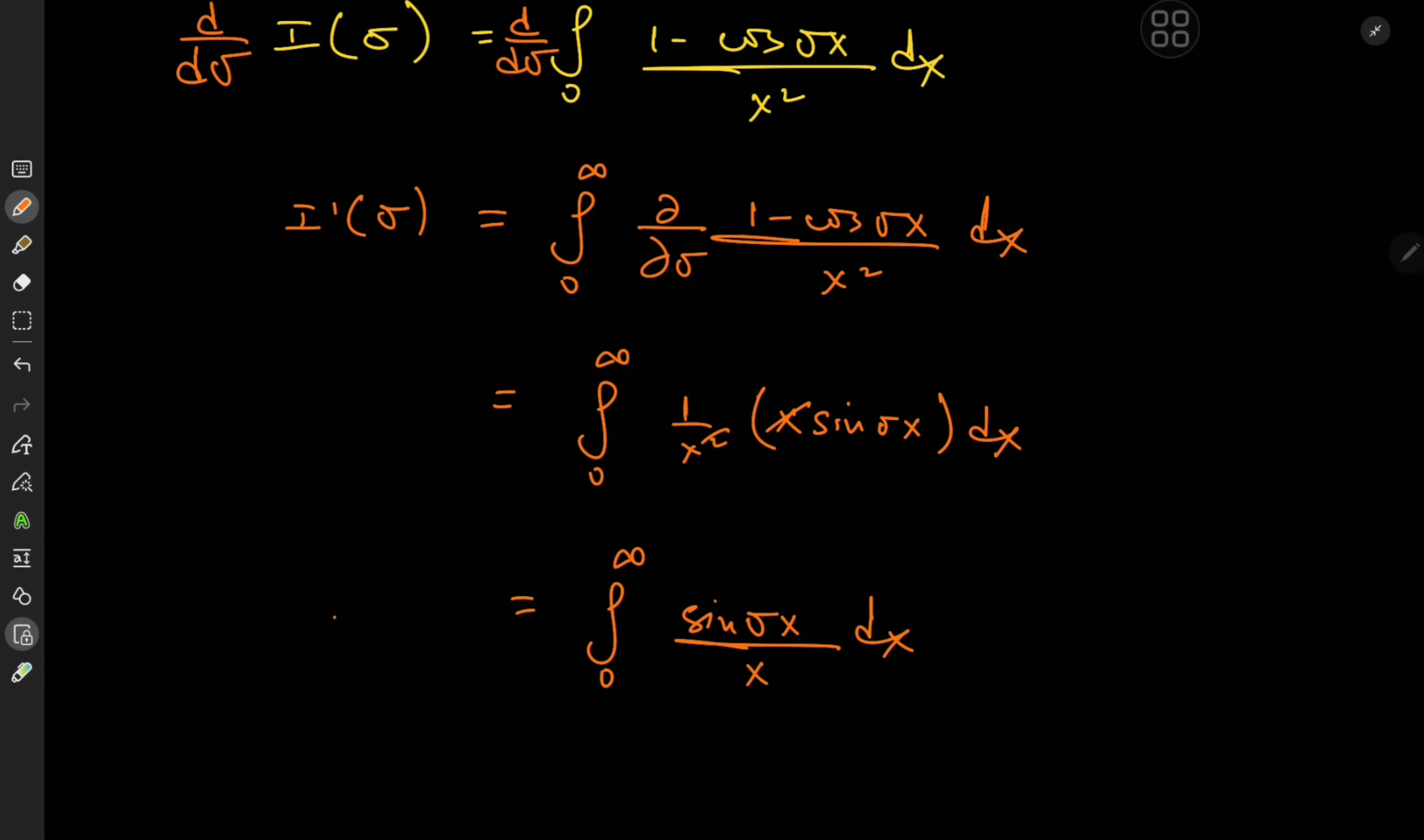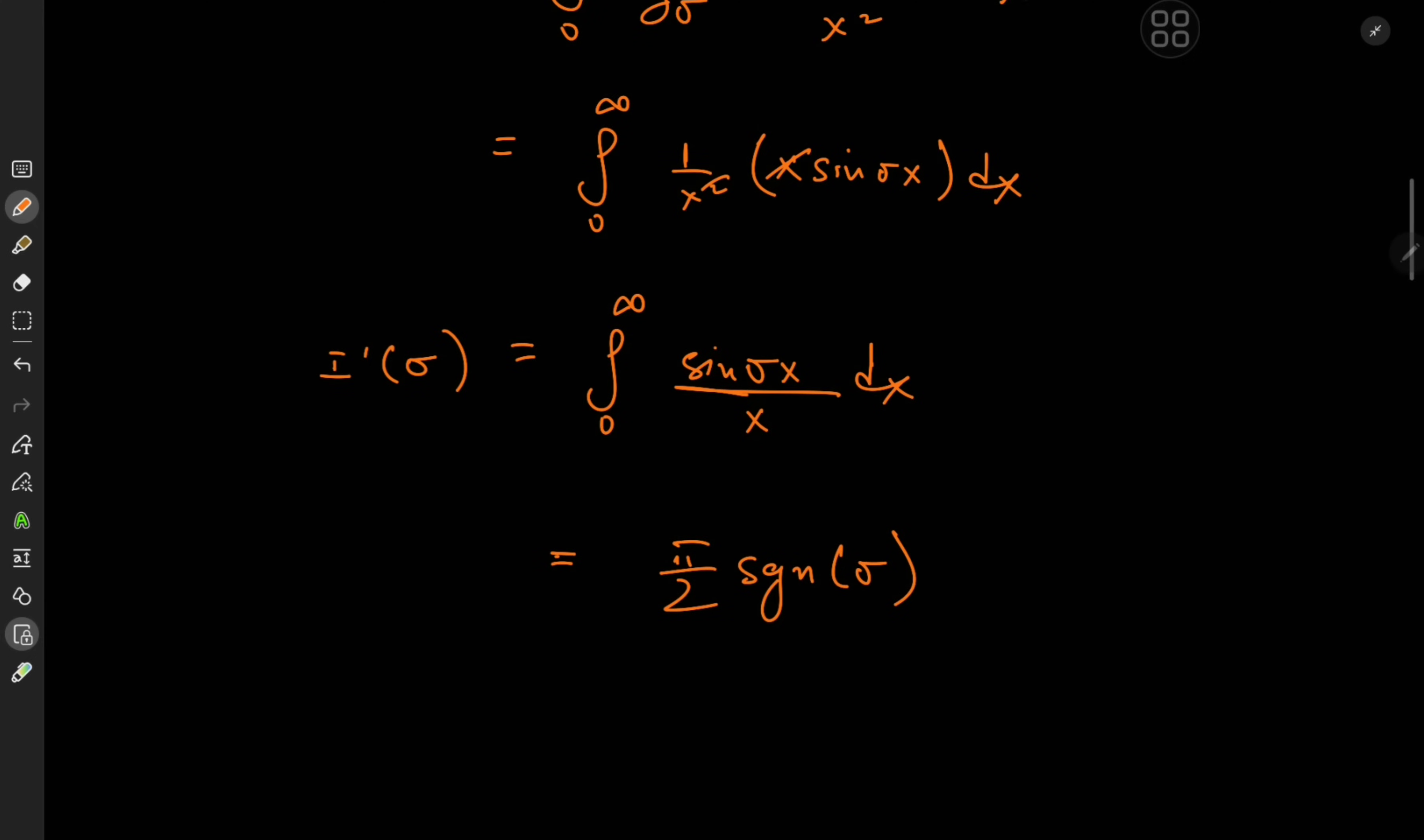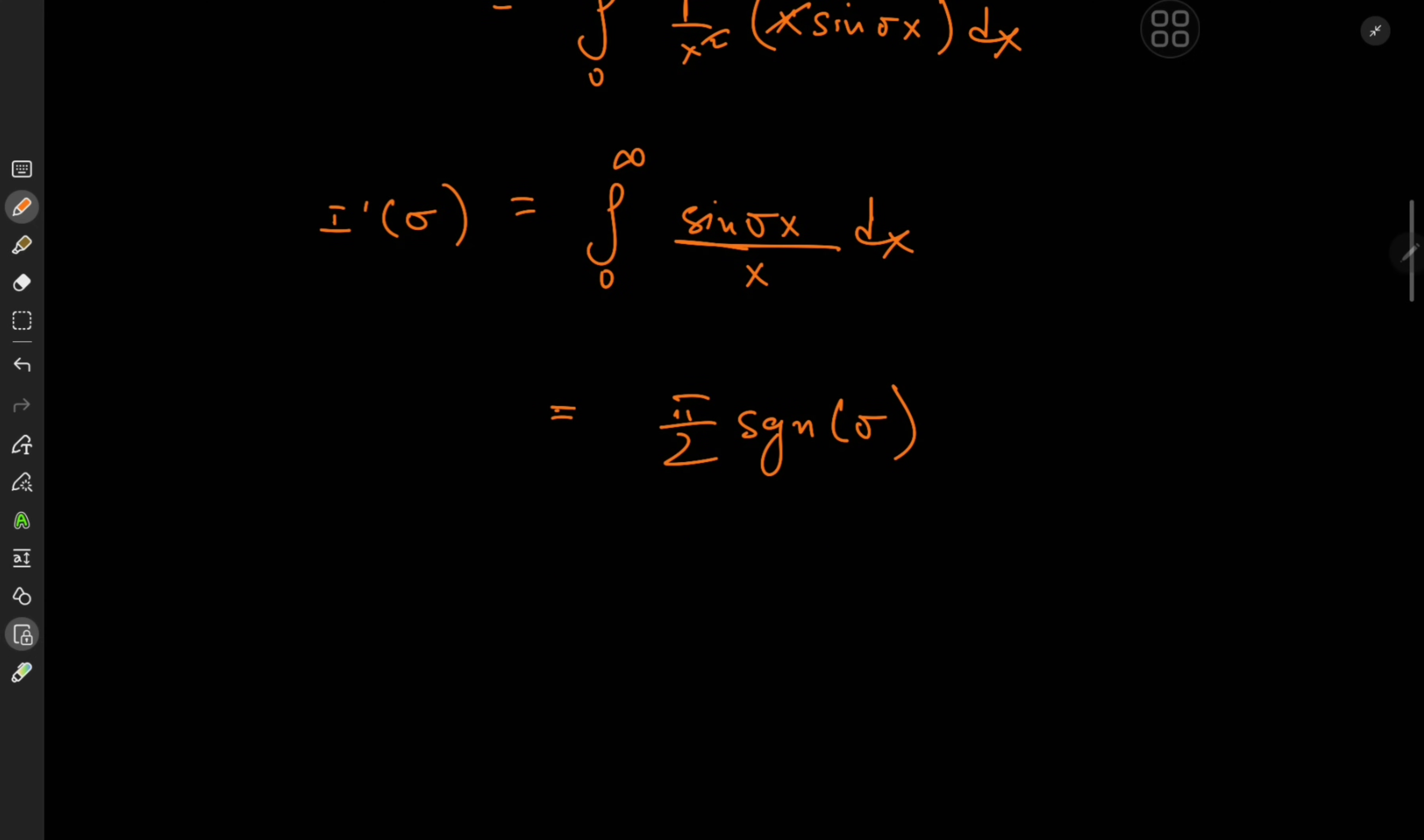So we have integral zero to infinity of sine of sigma x over x dx. Now this is the famous Dirichlet integral which we know sorts out to pi over 2 but it could also sort out to negative pi over 2 depending on the sign of sigma. So the answer should be pi over 2 sign of sigma, where this thing is plus 1 if sigma is positive and negative 1 if sigma is negative.